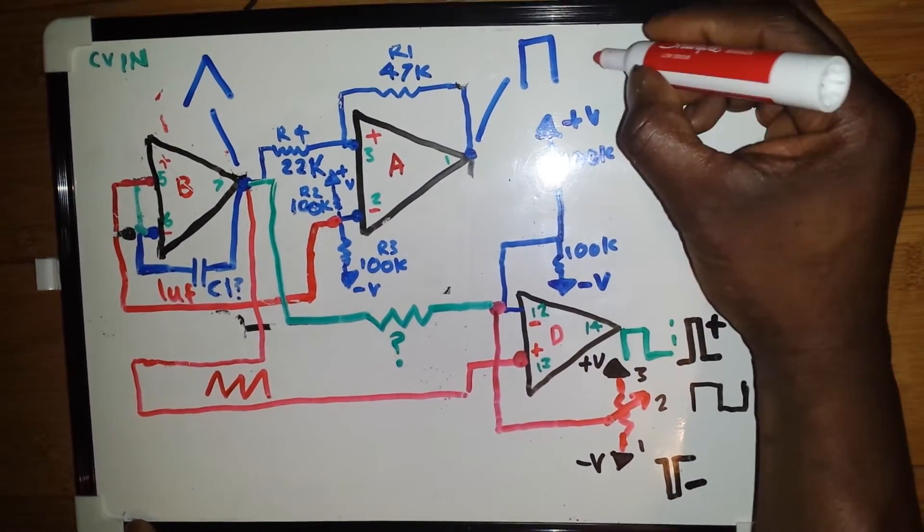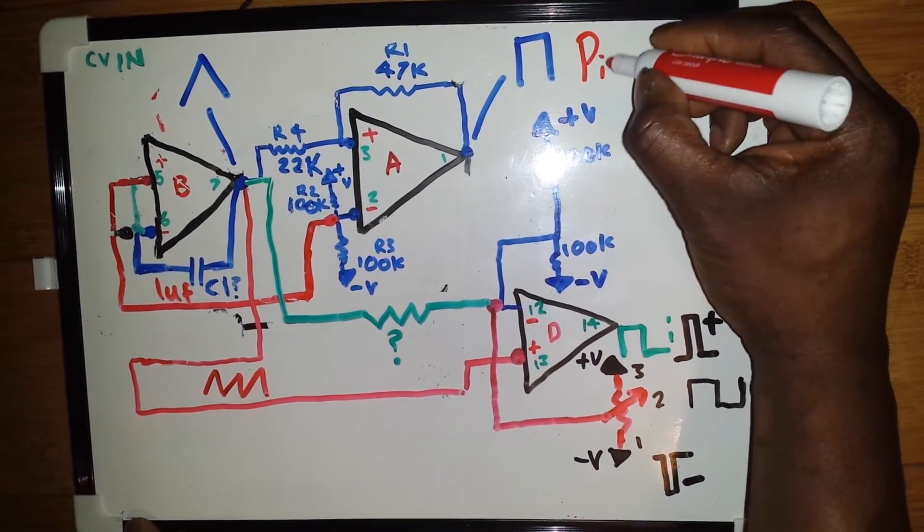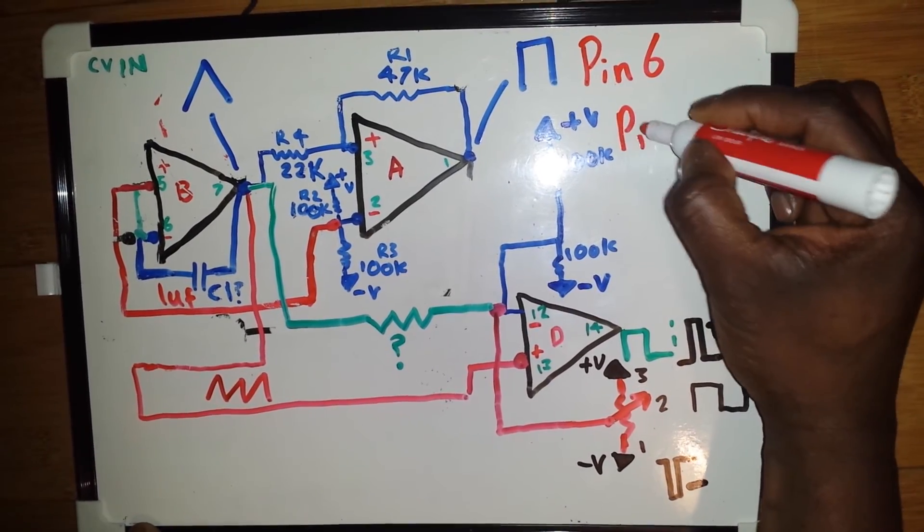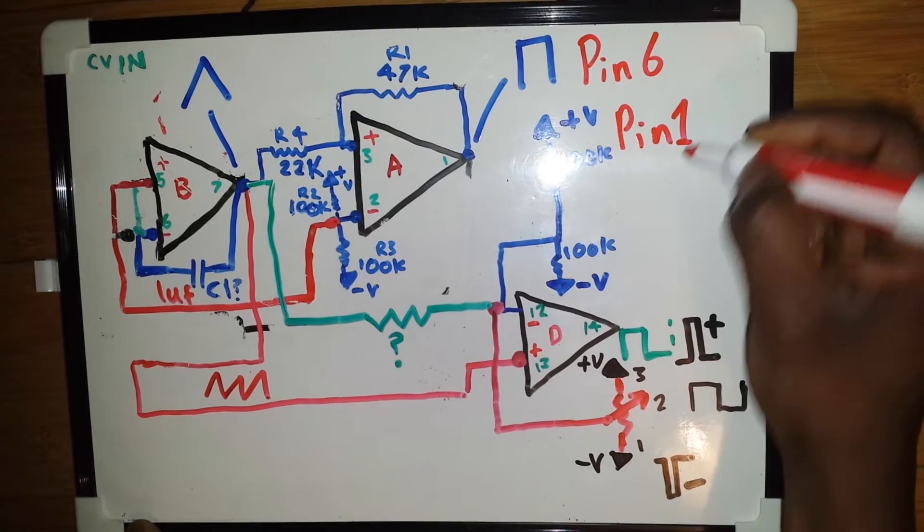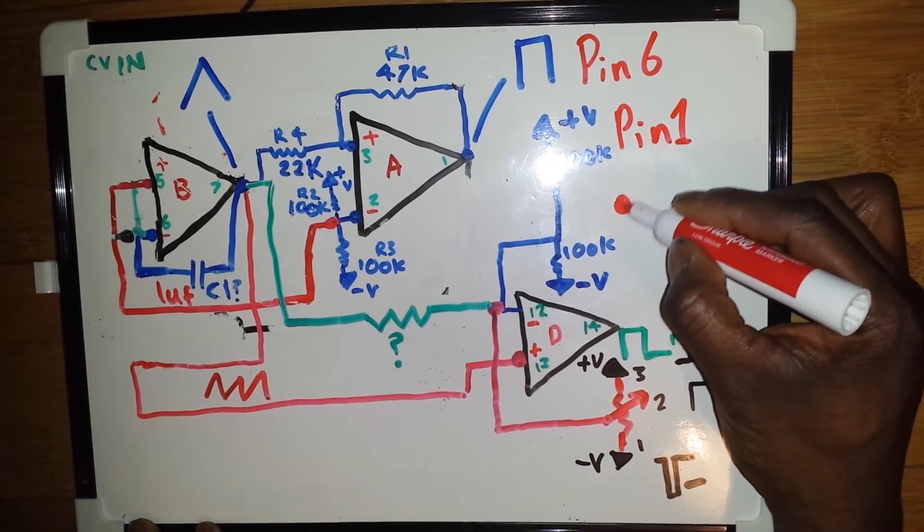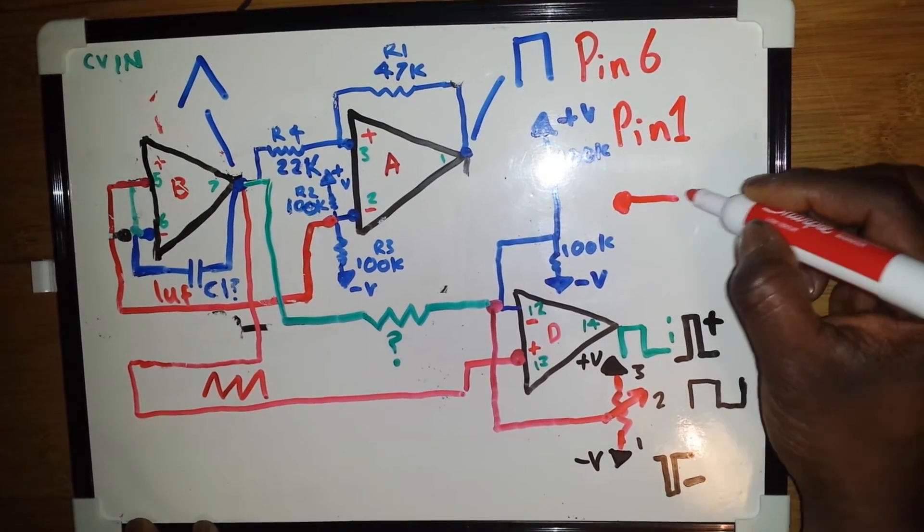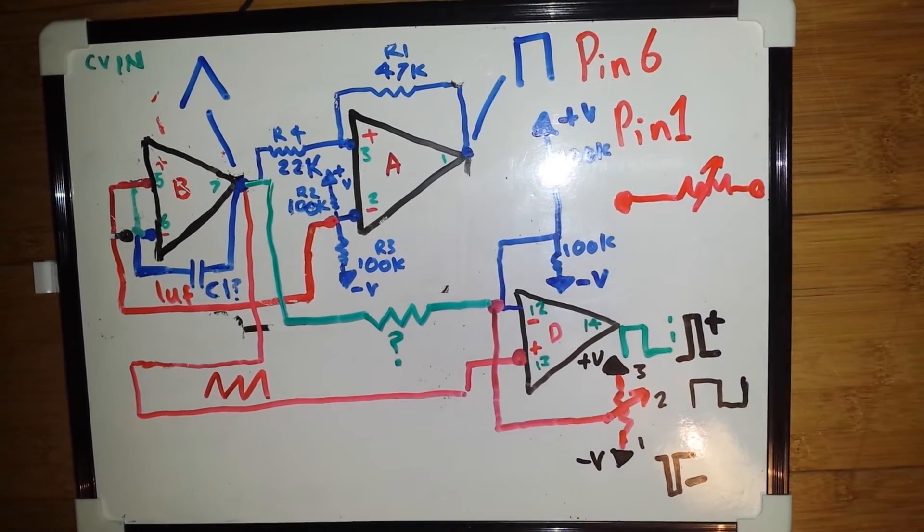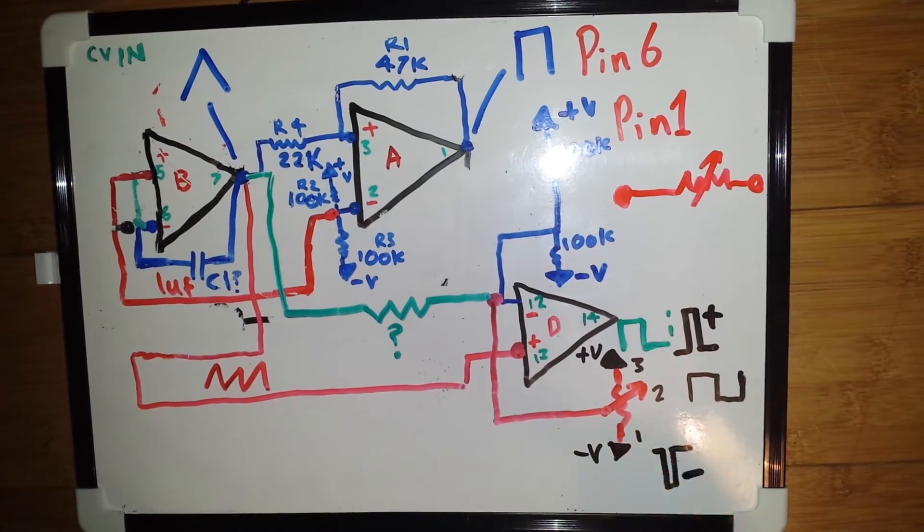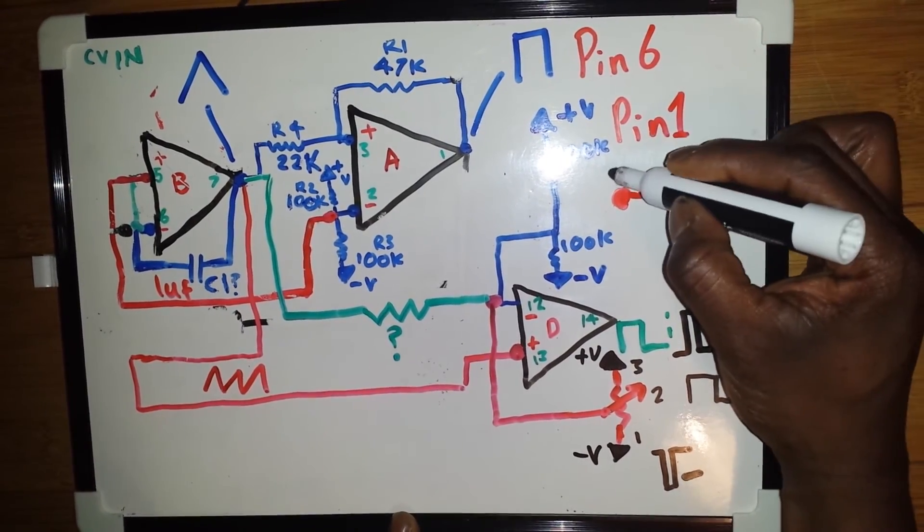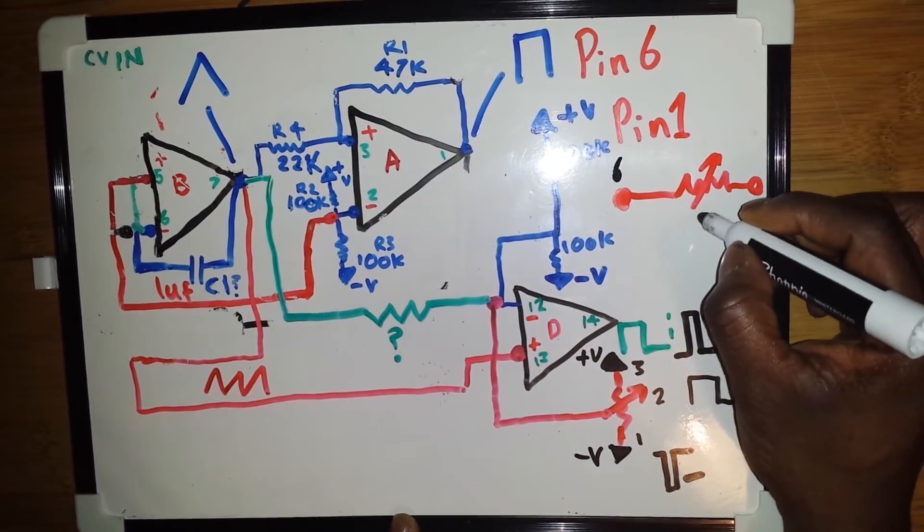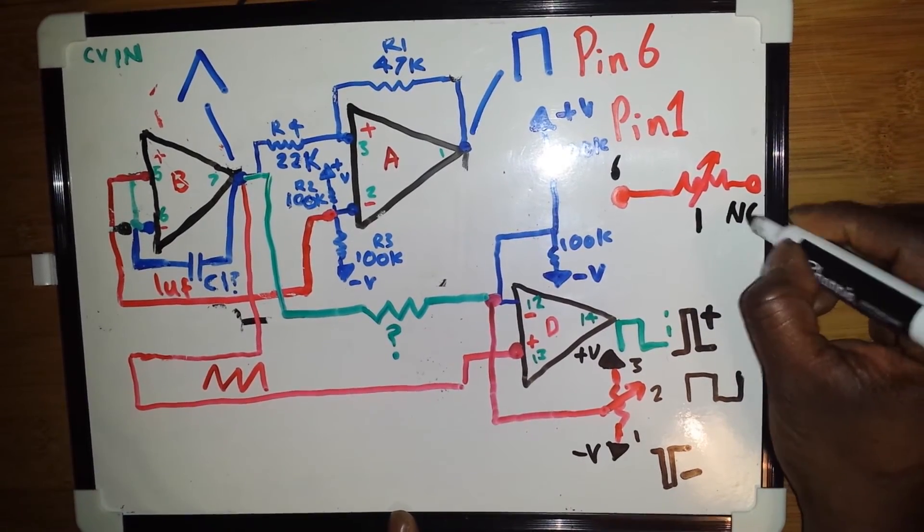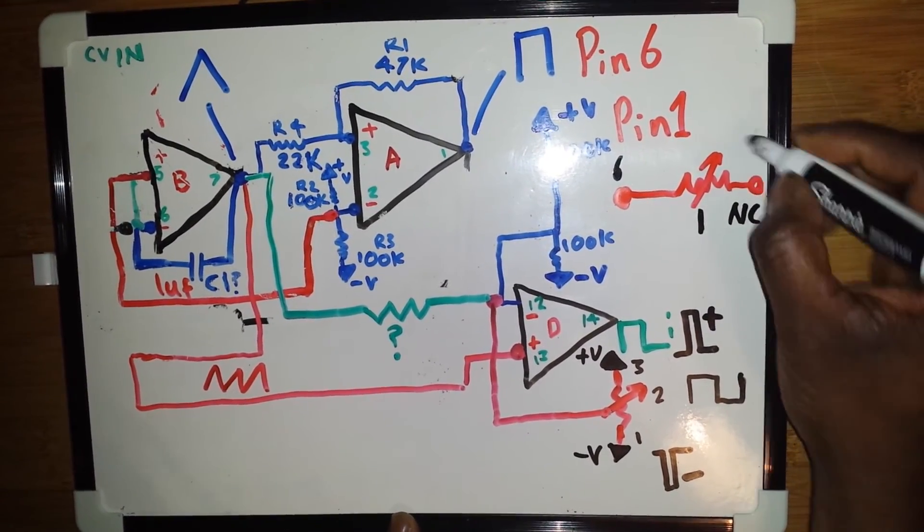But before we can get this LFO to work, we must connect pin 6 and pin 1 to a potentiometer. So we will give that a little variable resistor symbol. And we will take pin 6 here and pin 1 to the wiper.